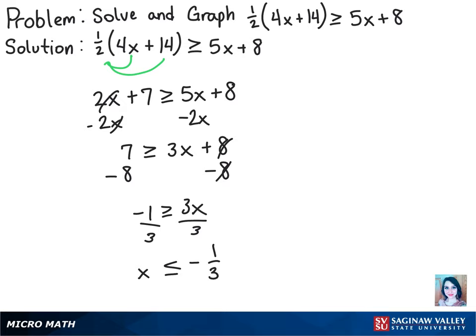It could also be written as negative one-third is greater than or equal to x, but I just skipped that step and flipped it right away.